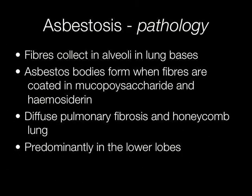In asbestosis, asbestos fibres collect in the alveoli in the lung bases. Asbestos bodies form when fibres are coated with mucopolysaccharide and haemosiderin. This results in diffuse pulmonary fibrosis and honeycomb lung, with changes seen predominantly in the lower lobes.